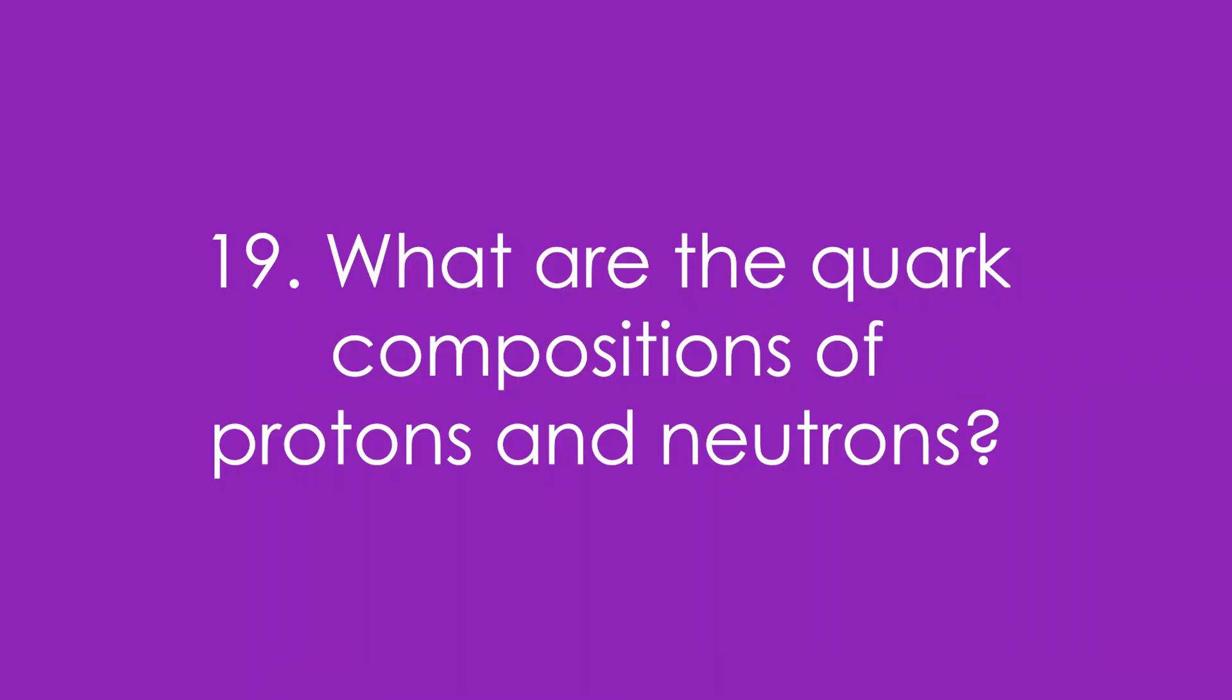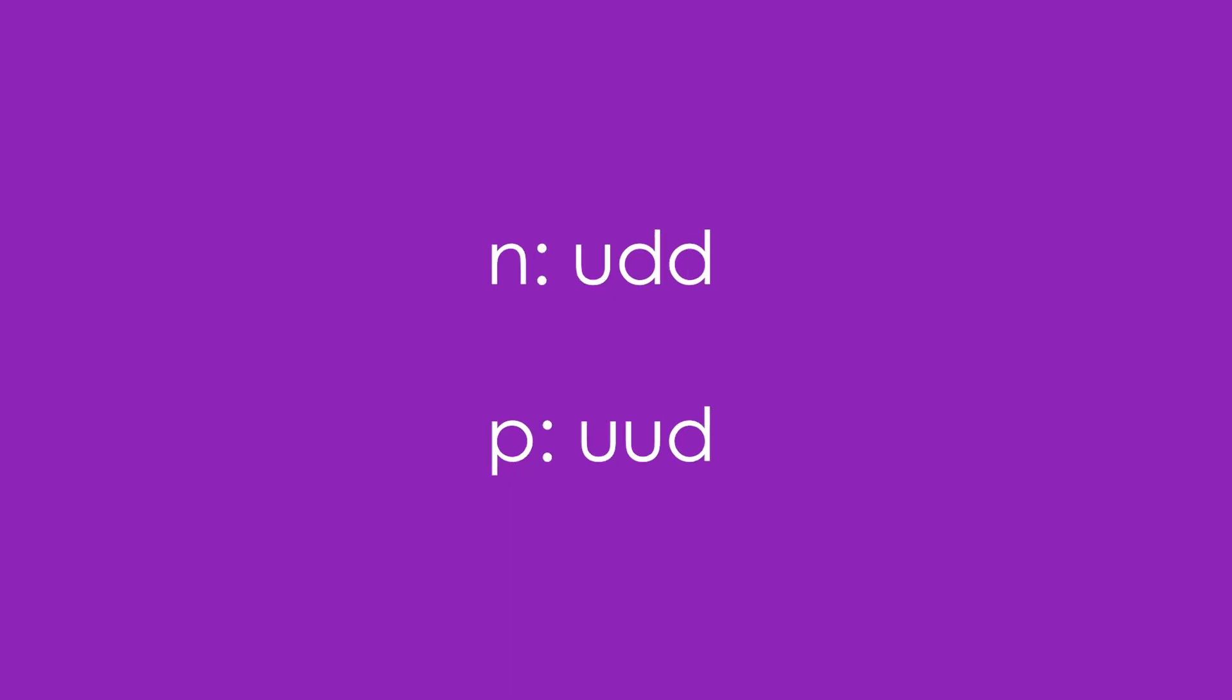19. What are the quark compositions of protons and neutrons? It's the NUD and the PUD. Neutron is up, down, down. Proton is up, up, down.